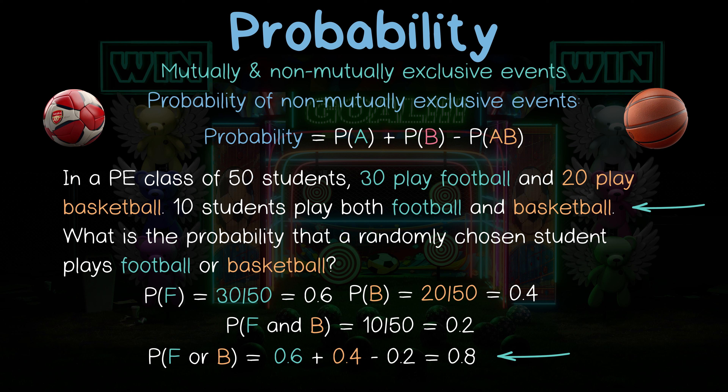To round up: calculating the probability of mutually and non-mutually exclusive events is very similar. You just have to look for overlapping events — in which case you've identified a non-mutually exclusive event — and then subtract the probability of that overlap from your original calculation.